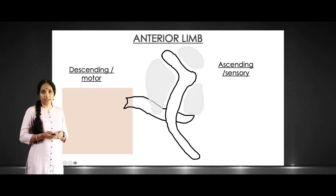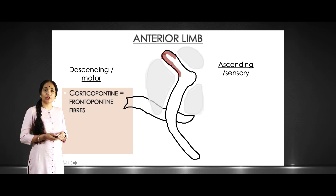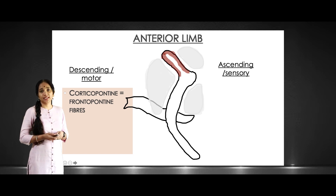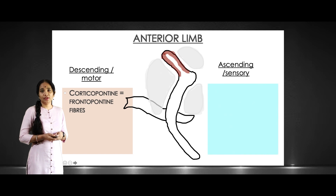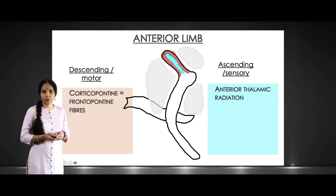The descending fibers are given in brown — they are the corticopontine or frontopontine fibers, located here. The ascending pathway going up towards the sensory areas consists of the anterior thalamic radiation, given in light blue.